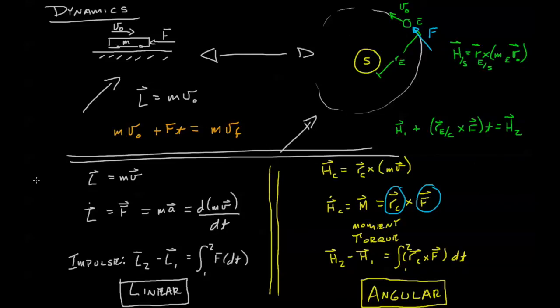So in summary we have three rules that guide our thinking about linear and angular systems. We have the momentum, we have the change in momentum, we have an equation that looks at the change in momentum as a function of some sort of applied force or moment, and finally we have the idea of impulse, which is the actual change between two states of either linear or angular momentum.